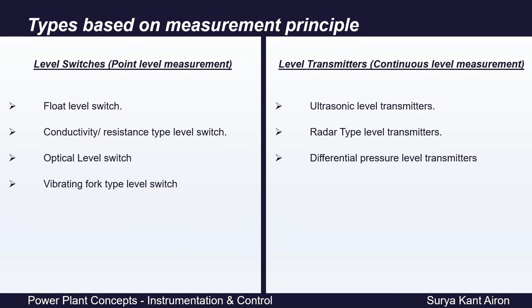Coming to the different types of level sensors based on their measurement principle: level switches — point level measurements — can be differentiated into four types: float level switches, conductivity or resistance type level switches, optical level switches, and vibrating fork (tuning fork) type level switches. Level transmitters can be segregated into three types: ultrasonic, radar, and DP type.